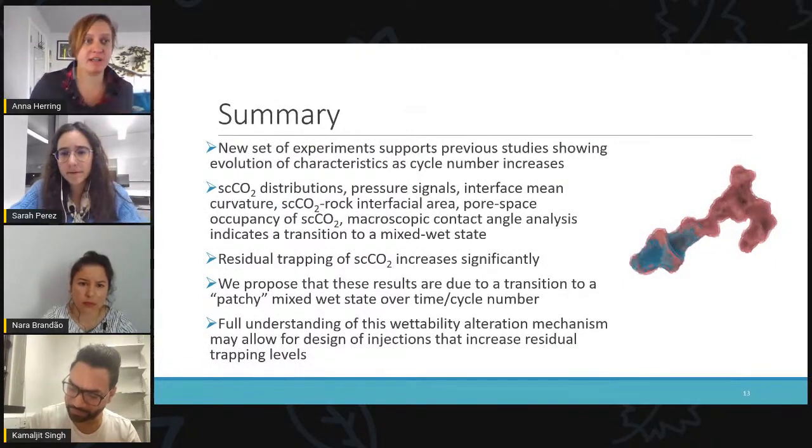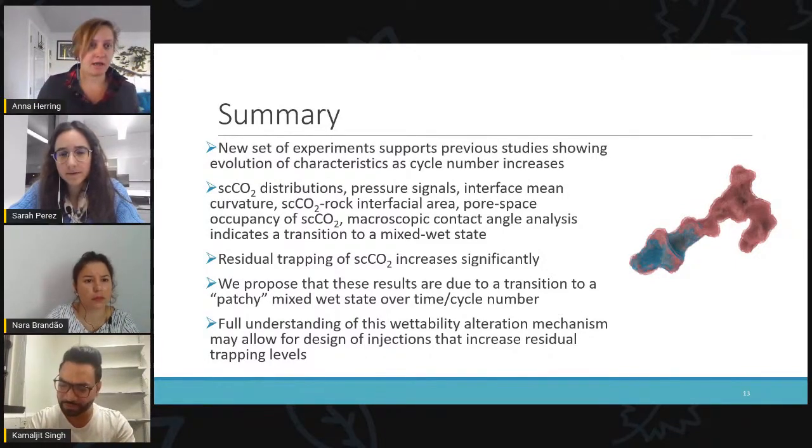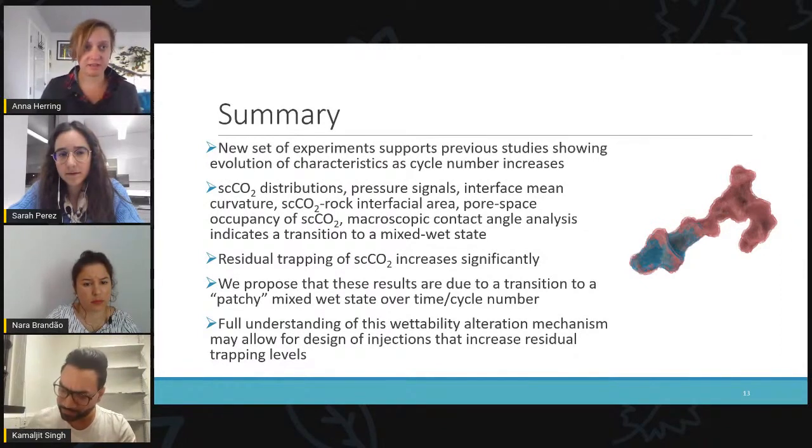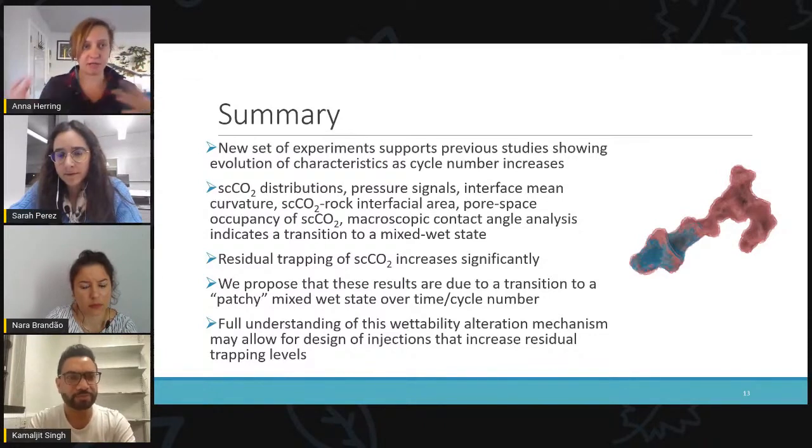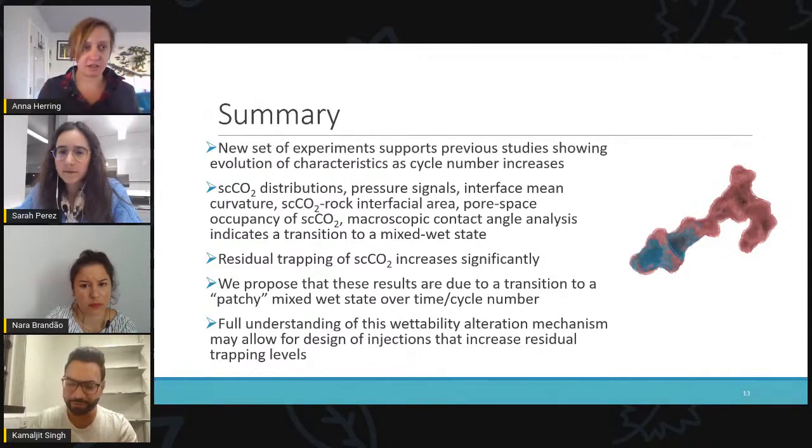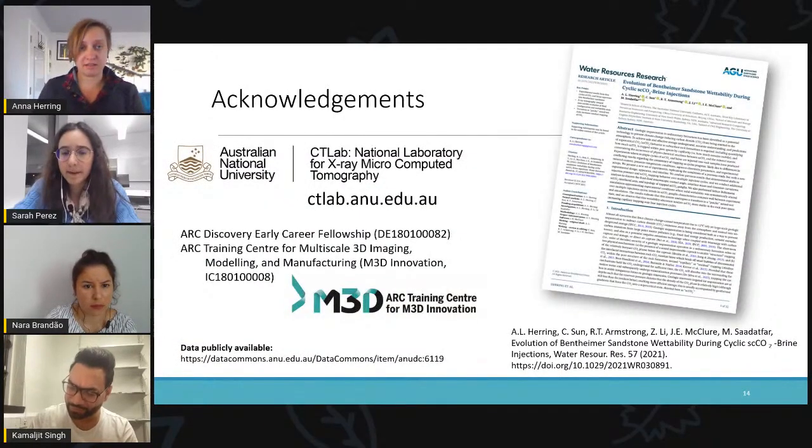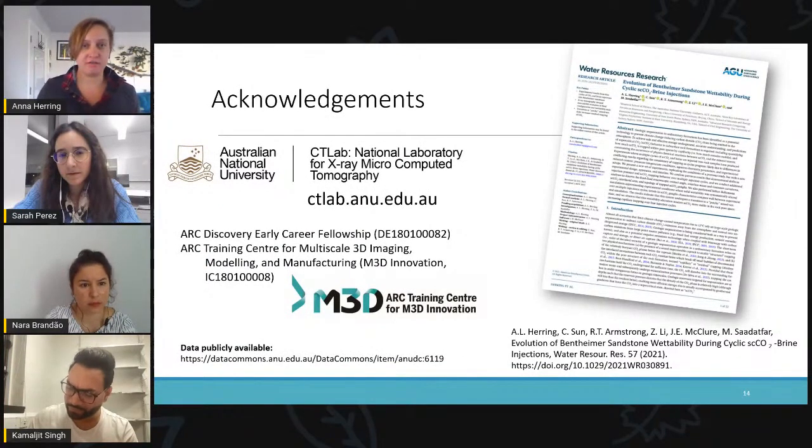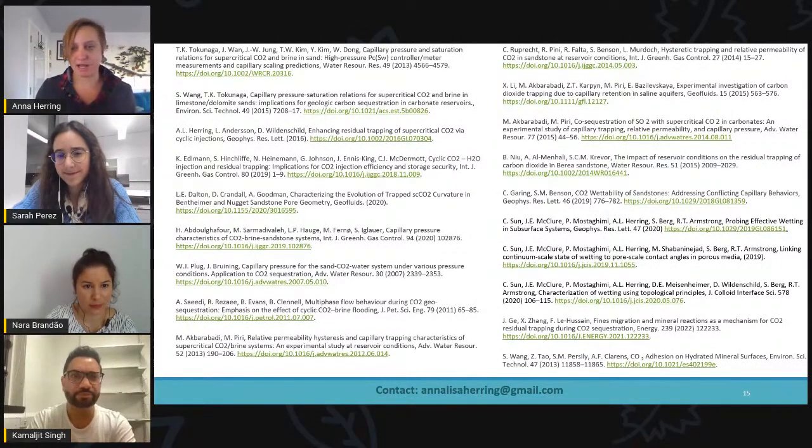OK, so in summary, we've shown here a new set of experiments that does support previous results showing that there's this evolution of CO2 flow and trapping as we go through multiple drainage and imbibition cycles. We see that residual trapping of CO2 increases significantly as we go through these cycles and we propose that this is due to a transition to a mixed wet state. And we think that if we can better understand how this wettability alteration mechanism is actually occurring, that might allow us to design injection to deliberately increase residual trapping. And the paper on this experiment was just published in an issue just last week. And there's a lot more discussion of these wettability alteration mechanisms. And I'm happy to take questions if there's still time.